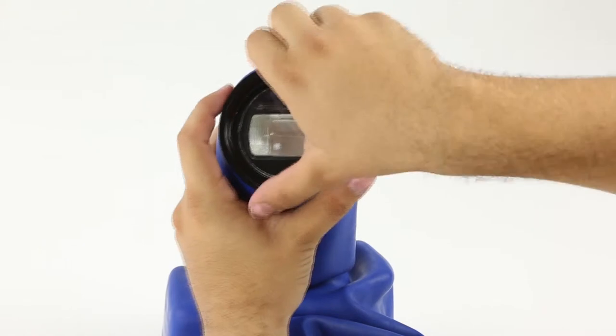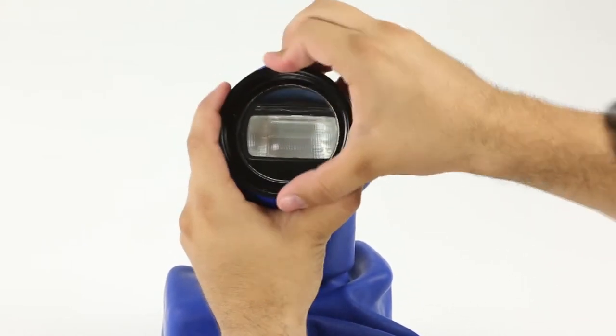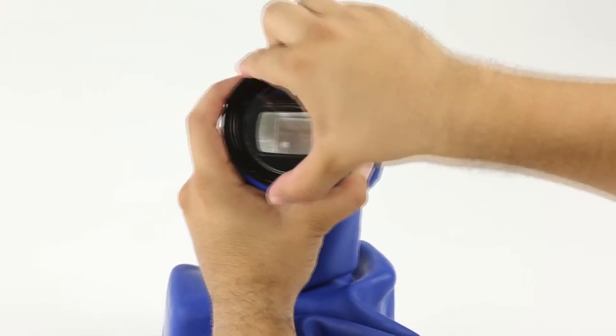Now you can complete the seal by threading on the third O-ring. You don't need to over-tighten, but make sure it's nice and tight.